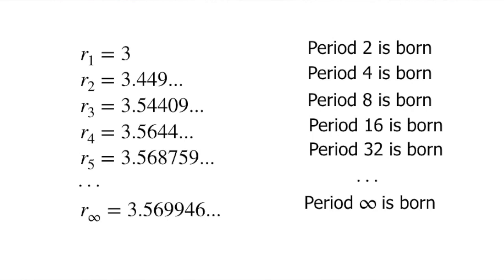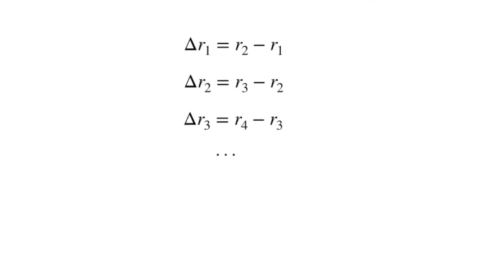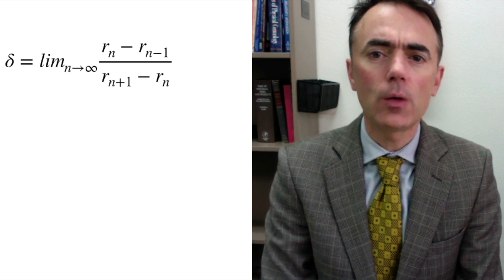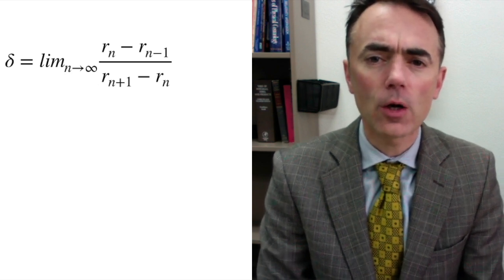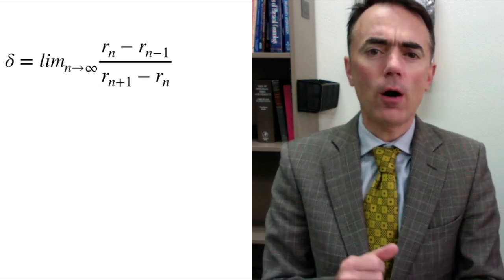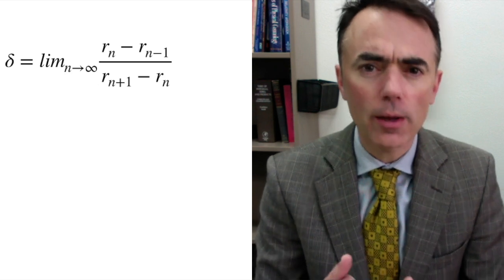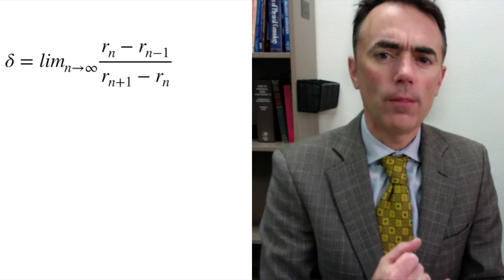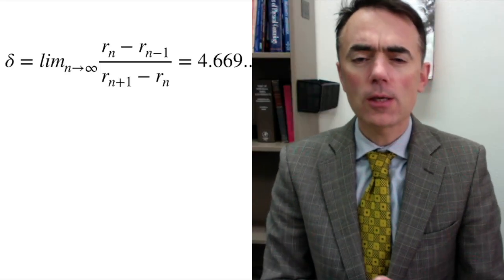We can write for which values of r each doubling takes place. We can also study the distance between these r values and calculate the ratio of one r interval versus the next one. We will observe that they tend to a particular value. Delta equals the limit of n going to infinity of r sub n minus r sub n minus 1 divided by r sub n plus 1 minus r sub n. This number is 4.669.